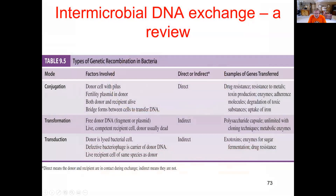This table does a very nice job comparing and contrasting the three types of genetic recombination we just talked about — conjugation, transformation, and transduction. Spend some time studying those three, and if you want to see where all three are laid out next to each other so you can see the differences, this is an excellent table to look at.